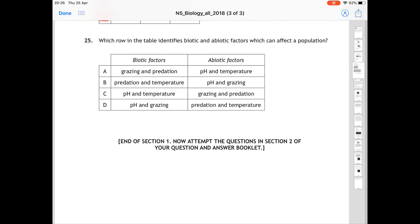And finally, for 25, which row in the table identifies biotic and abiotic factors which can affect a population? So there's all these examples of biotic and abiotic factors. Most of them are wrong. If you look at 25A, then grazing and predation are examples of biotic factors. pH and temperature are examples of abiotic factors. So 25 is A.